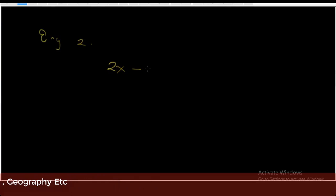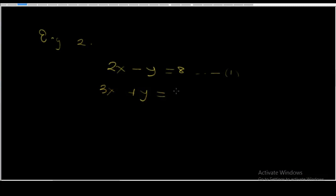Now for example 2: 2x minus y is equal to 2 — this is equation 2. Just like before, we're going to use the elimination method. You will agree that the coefficient of y in equation 1 and equation 2 is the same. So all we're going to do now is to add equation 1 to equation 2 to eliminate y and find x.